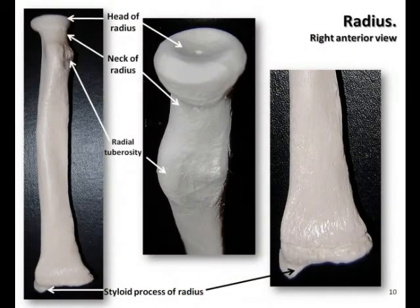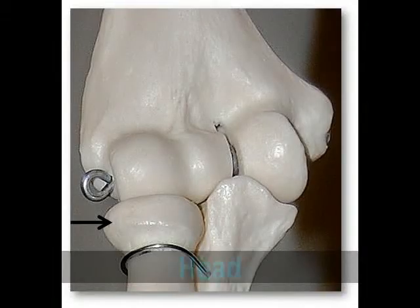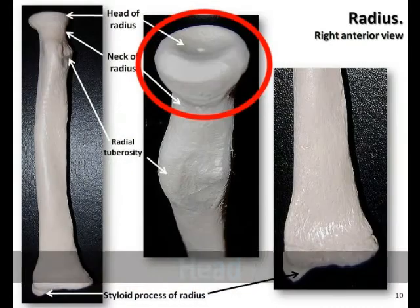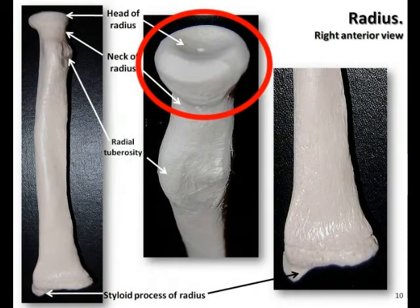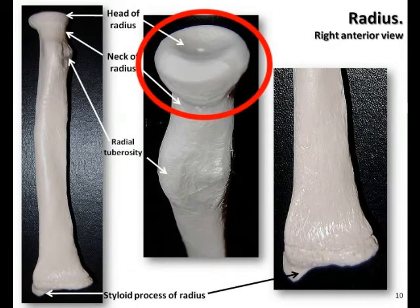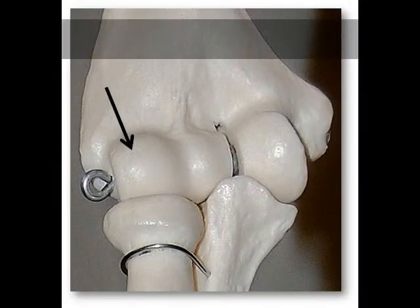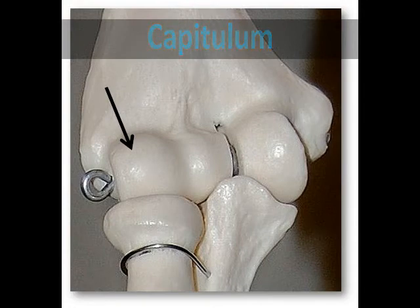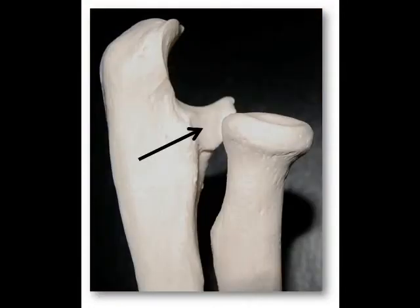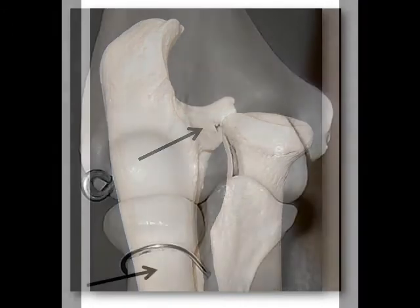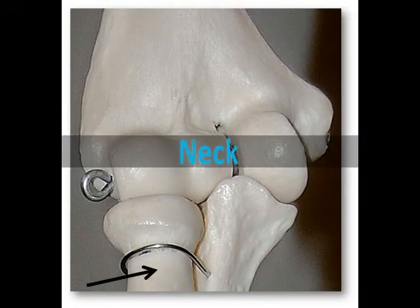Now let's examine the bony landmarks of the radius. The head of the radius is located at the proximal end of the bone. It has a round disc shape that resembles a slightly warped hockey puck. The round head of the radius articulates with the capitulum of the humerus as well as the radial notch of the ulna. Just inferior to the head is the narrow neck of the radius.